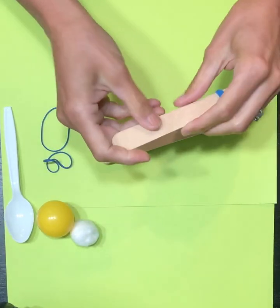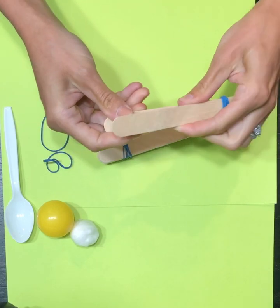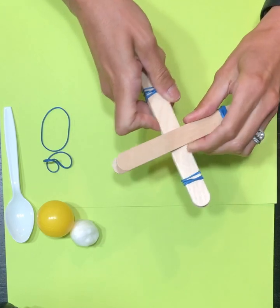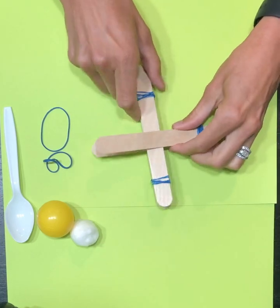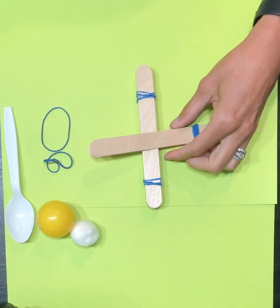Then the next thing you're going to do is you're going to open up your two popsicle sticks that are only secured at one end and you're going to put the stack of seven inside like this. So you could see it's kind of open and then you stack those on the inside.